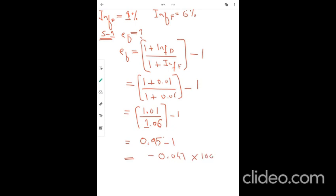If I multiply this with 100, I get a percentage value and that will become minus 4.7%. It means that the foreign currency, which is Australian dollar in our example, will decrease in value by 4.7%. Now, if it decreases by 4.7%, then how much exactly the future exchange rate will be? Let's do that in another form.